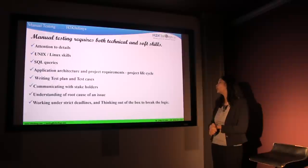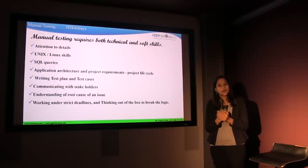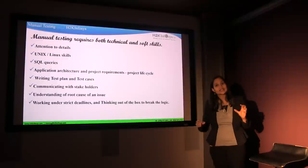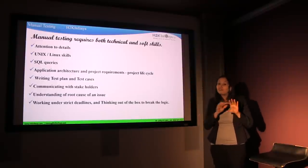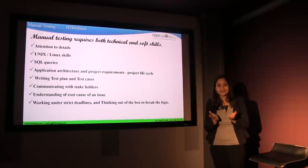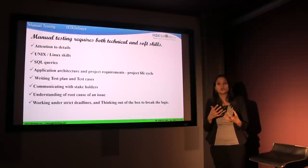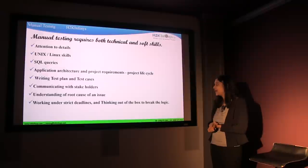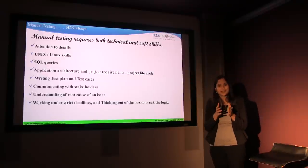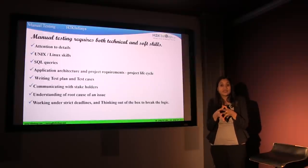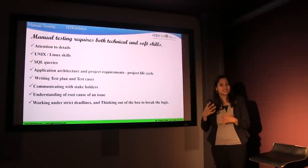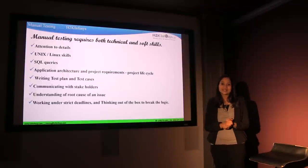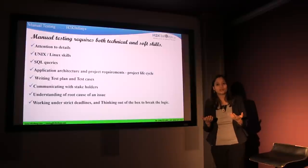Working under strict deadlines and thinking out of the box to break logic are also critical skills. As a quality assurance analyst, you are last in the pipeline — the developer, project manager, and everyone else has finished their work before it comes to you, so you will always be working under very strict deadlines and tremendous stress. Thinking out of the box means looking at an application differently to uncover bugs, rather than taking a stereotyped approach — thinking of different scenarios to test the application. These are the primary skills a QA analyst should have or develop over time to be successful.